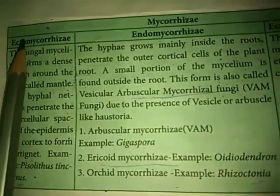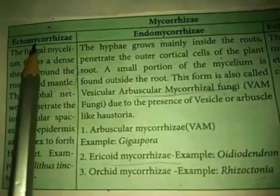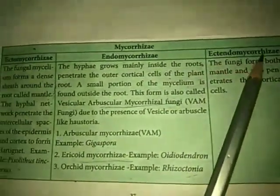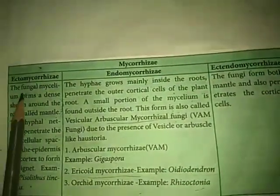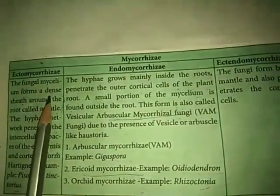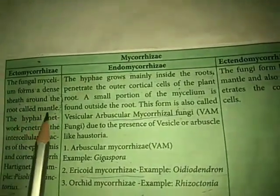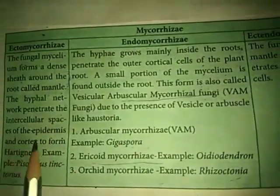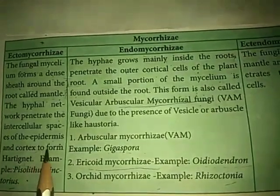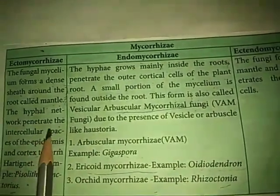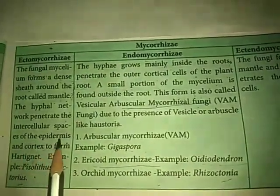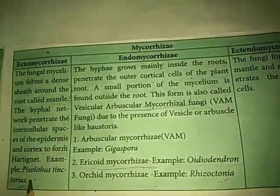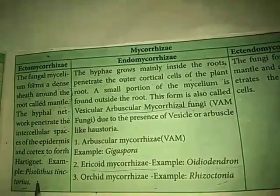Mycorrhizae are classified into three types: ectomycorrhizae, endomycorrhizae, and ectendomycorrhizae. In ectomycorrhizae, the fungal mycelium forms a dense sheath around the root called the mantle. The hyphal network penetrates the intercellular spaces of the epidermis and cortex to form the Hartig net. For example, Pisolithus tinctorius.